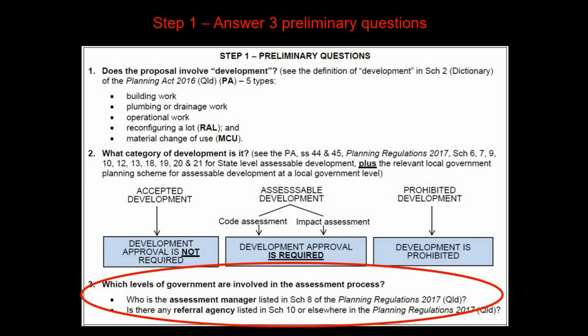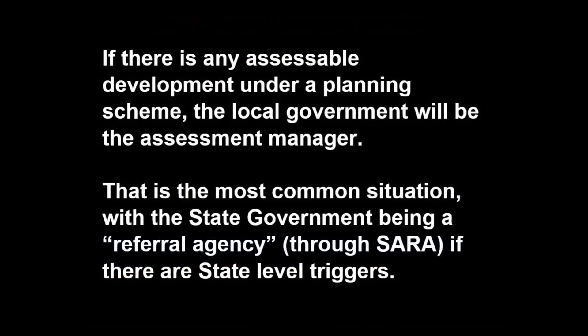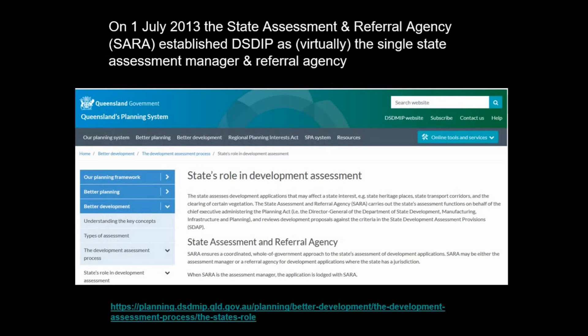The third question is: what levels of government are involved in the assessment process? The basic rule is that if there is any assessable development under a planning scheme, the local government will be the assessment manager — and that's normally the case. If there is also a state-level trigger, then the state government is a referral agency under the State Assessment and Referral Agency (SARA) framework, which is an online portal for making referrals or applying for state government assessment. SARA is the most common referral agency.